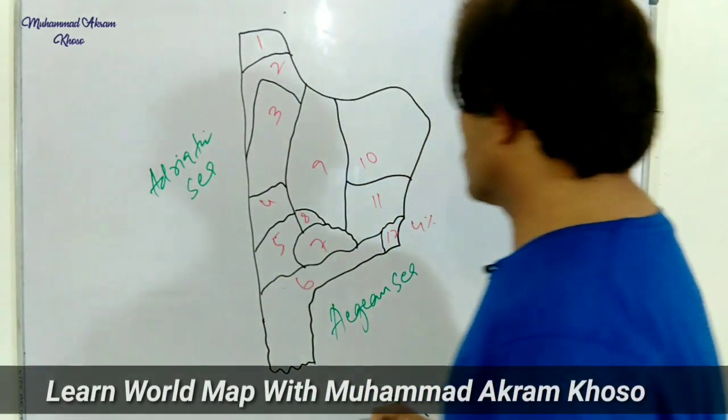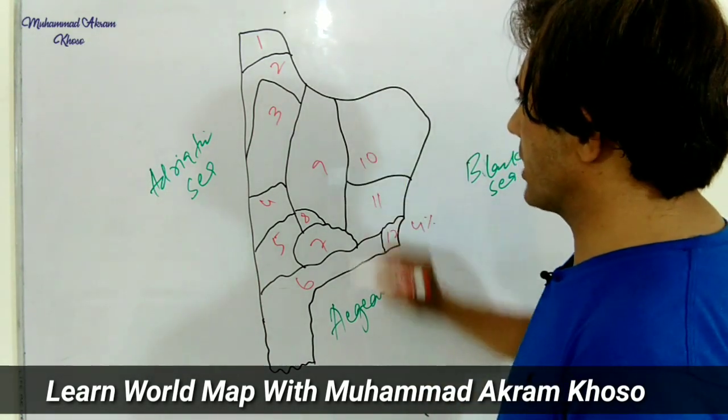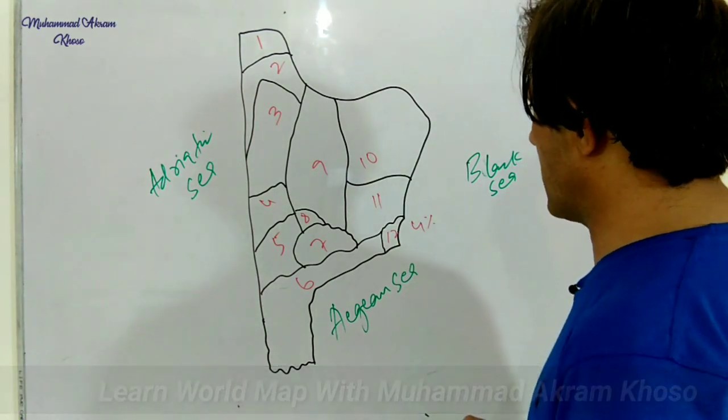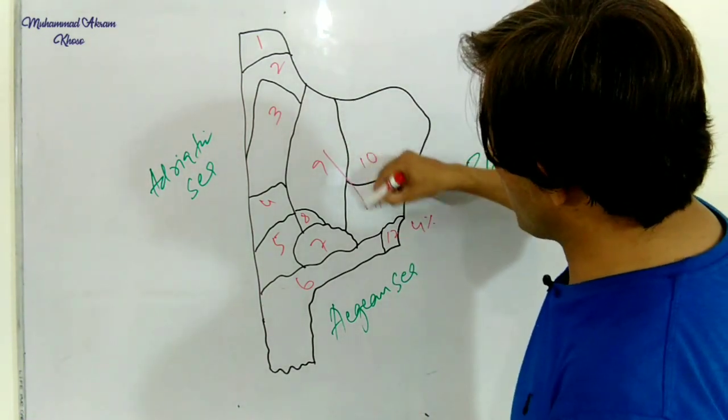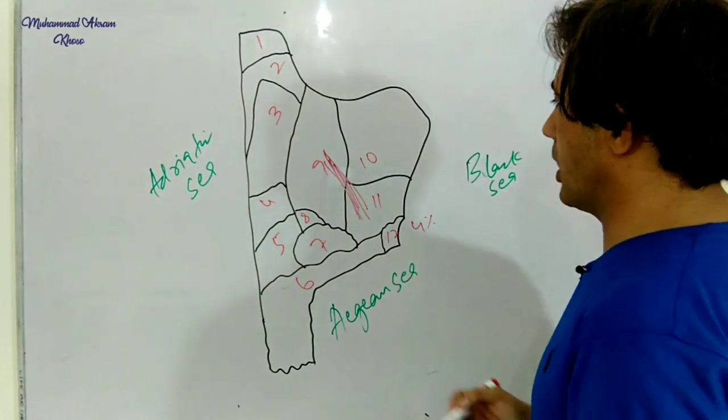So it is a peninsula and there are mountains here. As I said, number nine Serbia, number eleven Bulgaria, and number ten Romania, there are mountain ranges. Because of those mountains, this region is called the Balkan Peninsula.